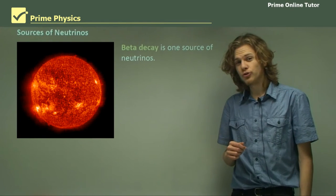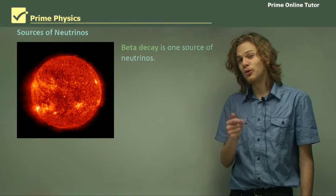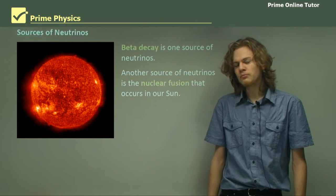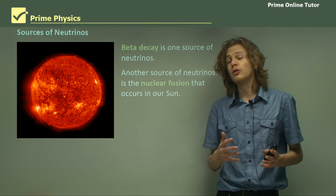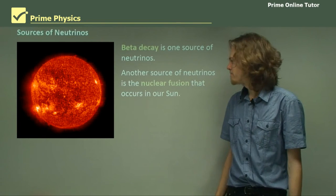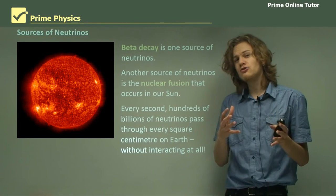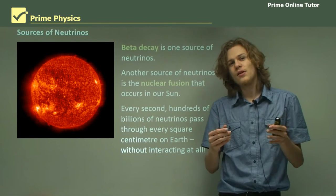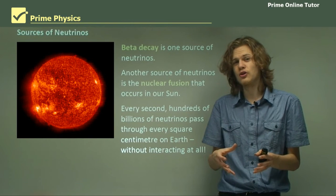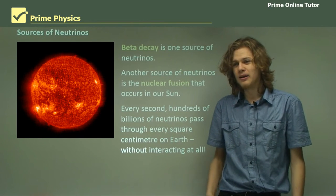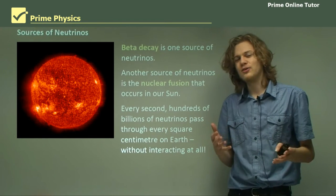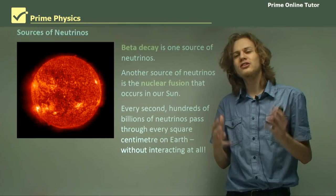Beta decay is one source of neutrinos, but it turns out there is another source, which we can see in this photo over here, and that is the Sun. Nuclear fusion also produces a lot of neutrinos, especially if you're producing neutrinos on the same scale as the Sun. Every second, so many neutrinos come from the Sun that on every square centimeter on Earth, you get tens of billions of neutrinos passing through it every second. And we don't notice it at all.